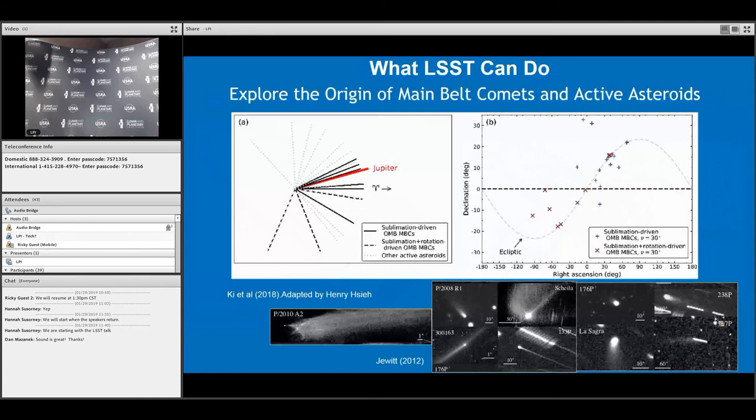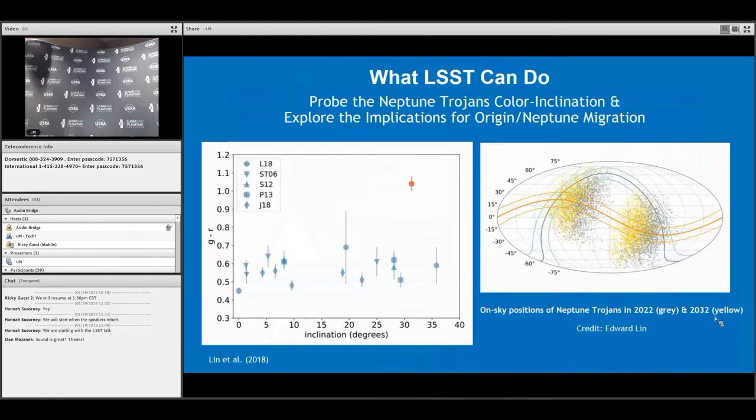What else can it do? It's going to explore the origin of main belt comets and active asteroids. For objects in the asteroid belt that have sublimation-driven activity, it seems their orbits are aligned with Jupiter. There's only about 16 or so main belt comets, but LSST is going to at least double that number, if not more.